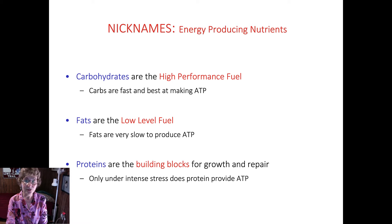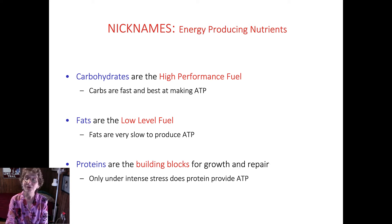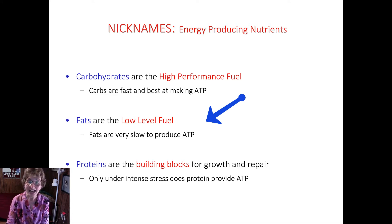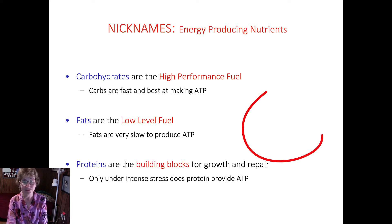Carbohydrates are known as the high-performance fuel. Carbs are the best and fastest at providing ATP during high-intensity activity, but we also use them for lower-intensity activities. For long-term lower-intensity exercise, we use fat. Proteins are the building blocks for growth and repair of tissue. Only under intense, stressful situations do we get ATP from protein — we don't want to use protein for energy.